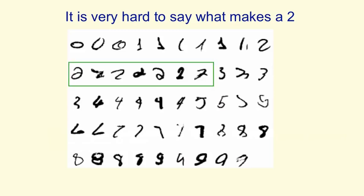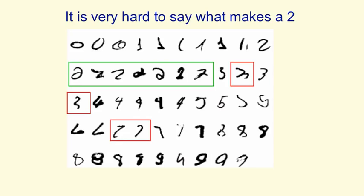If you look at a bunch of twos, like the ones in the green rectangle, you can see that if you knew they were a handwritten digit, you'd probably guess they were twos. But it's very hard to say what it is that makes them twos — there's nothing simple that they all have in common. If you try to overlay one on another, you'll see it doesn't fit. And a template is going to be very hard to find that'll fit those twos in the green box and won't also fit the things in the red boxes. So that's one thing that makes recognising handwritten digits a good task for machine learning.